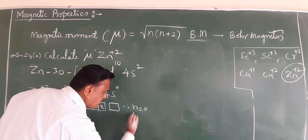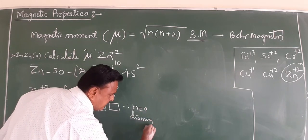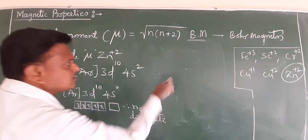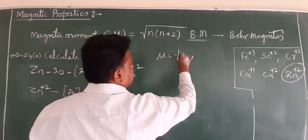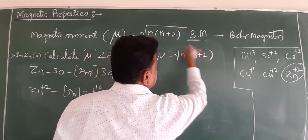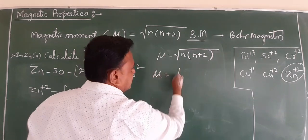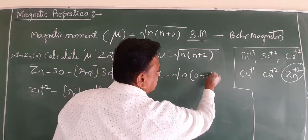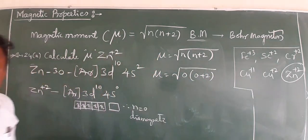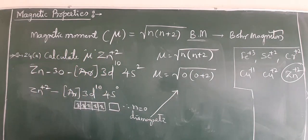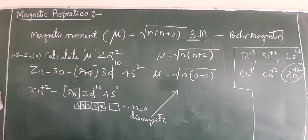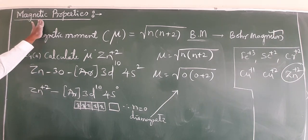If n = 0, the compound is diamagnetic. μ = √(0(0+2)) = √0 = 0. We get zero value. Automatically, the compound is diamagnetic. You can keep practicing with different elements calculating their magnetic moments.